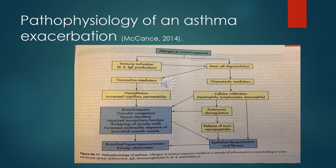Let's talk about the pathophysiology of an asthma exacerbation. If there is an allergen or irritant exposure, it can begin the asthma exacerbation process. It happens because of immune activation of IL-4, IgE production, and mast cell degranulation. This can cause chemotactic mediators, cellular infiltration with neutrophils, lymphocytes, and eosinophils, as well as vasoactive mediators and vasodilation with increased capillary permeability.